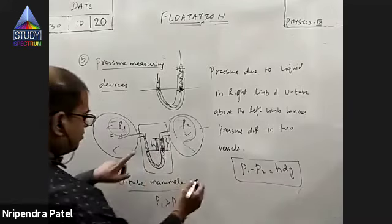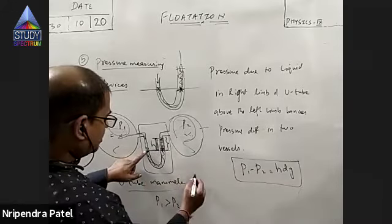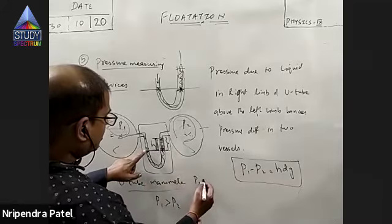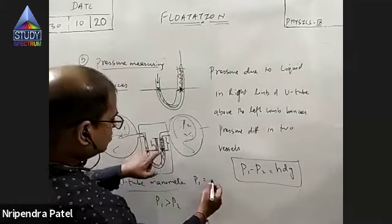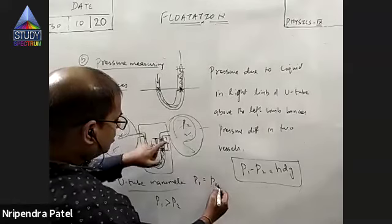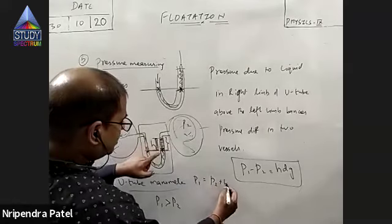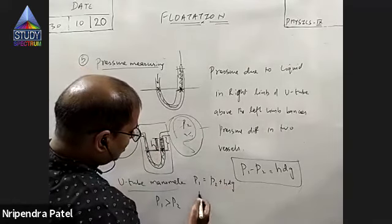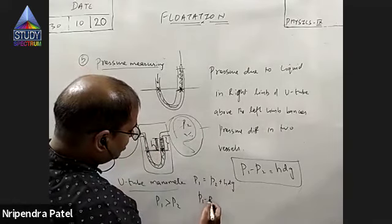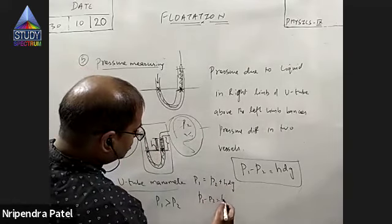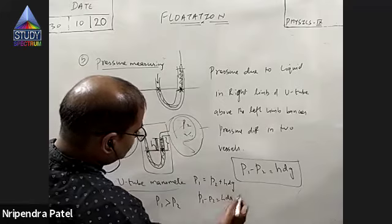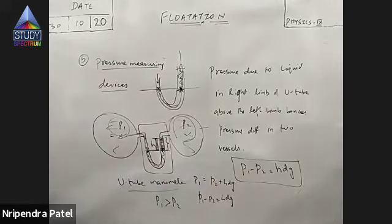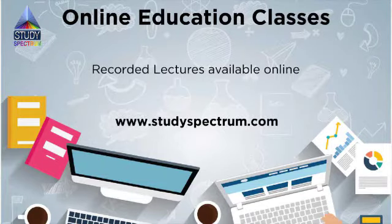So here, at this point, it's only this pressure — pressure due to this. Here at this point, pressure is due to this as well as this liquid. So pressure at this point is P1 and pressure at this point is pressure of the vessel plus H·D·G. So P1 minus P2 equals H·D·G.